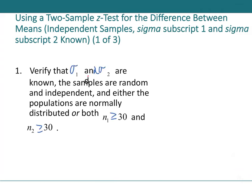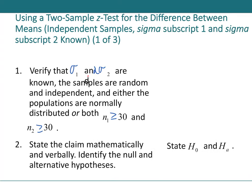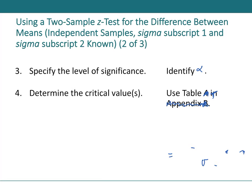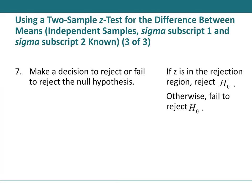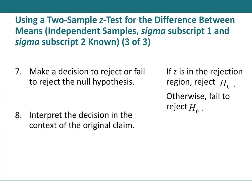Step-by-step z-test procedure: state H₀ and H_A; identify alpha; determine critical values; identify rejection regions; compute the test statistic z = (x̄₁ - x̄₂) / σ (always drop the zero term); decide to reject or fail to reject H₀; and interpret the decision in context.